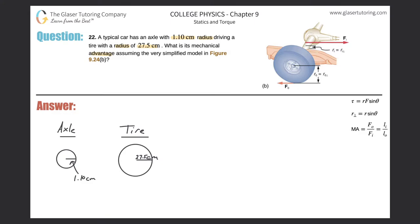This is kind of simplified, but I think this is even more simplified. So here's the axle. It has a radius of 1.1 centimeters. Here's the tire now, and it has a radius of 27.5 centimeters.